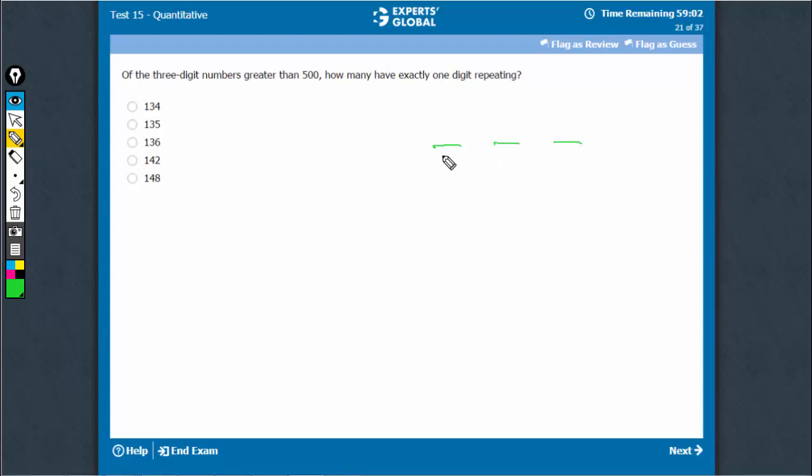We have 3 digits here. The 100th place has 5 choices: 5, 6, 7, 8, and 9.